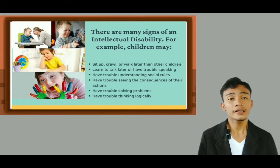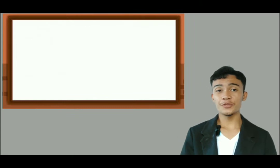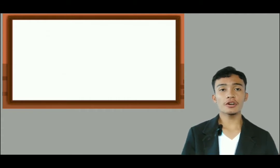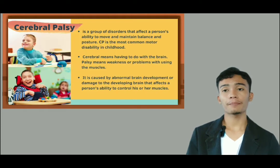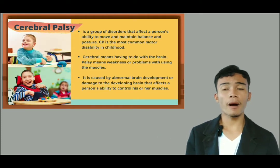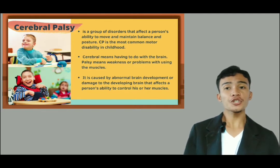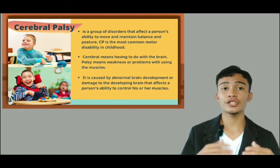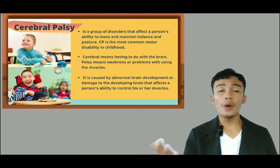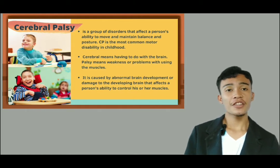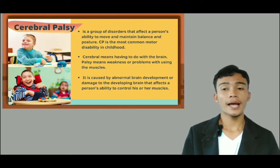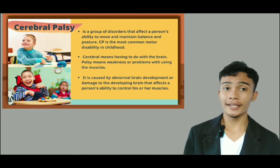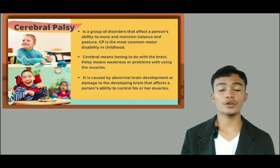We will now move on to the two common intellectual disabilities. Starting with number one, which is cerebral palsy. Cerebral palsy is a group of disorders that affect a person's ability to move and maintain balance and posture. It is the most common motor disability in childhood. Cerebral means having to do with the brain, and palsy means weakness or problems with using the muscles. It is caused by abnormal brain development or damage to the developing brain that affects a person's ability to control his or her muscles.